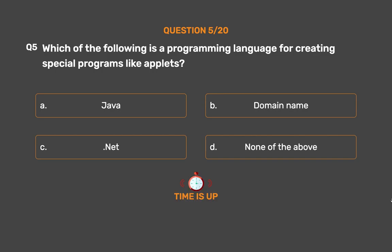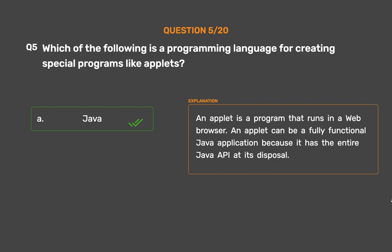The correct answer is Option A: Java. An applet is a program that runs in a web browser. An applet can be a fully functional Java application because it has the entire Java API at its disposal.